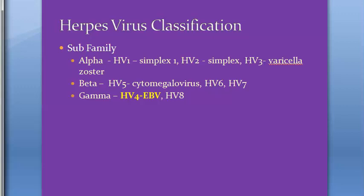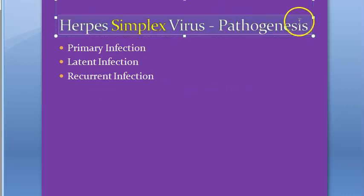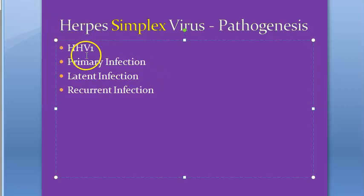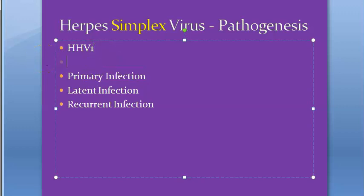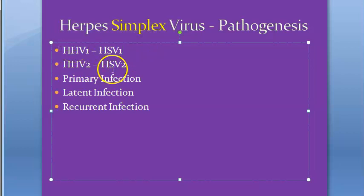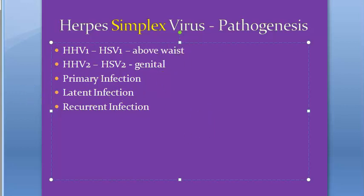Now let's move on to herpes simplex virus in detail. Herpes simplex virus 1 is human herpes virus 1 (HHV-1) and herpes simplex virus 2 is HHV-2. The key difference: HSV-1 causes lesions above the waist, while HSV-2 causes lesions below the waist, mainly affecting the genital area.